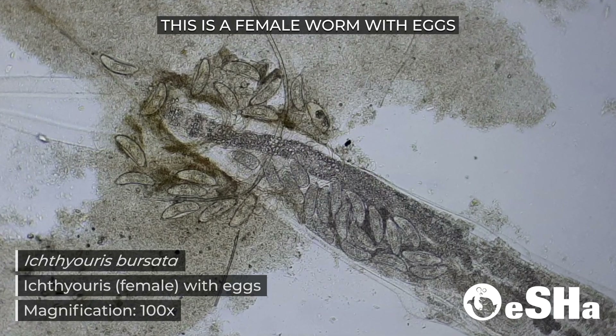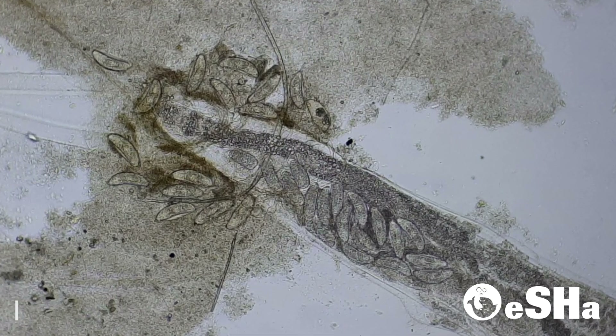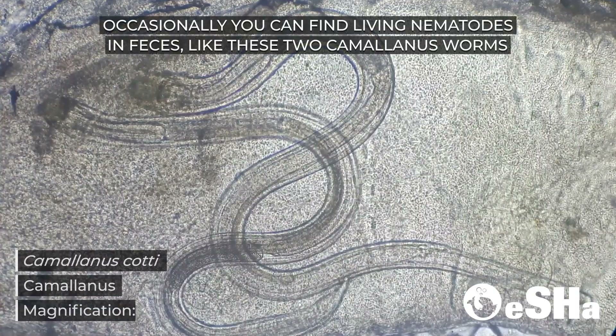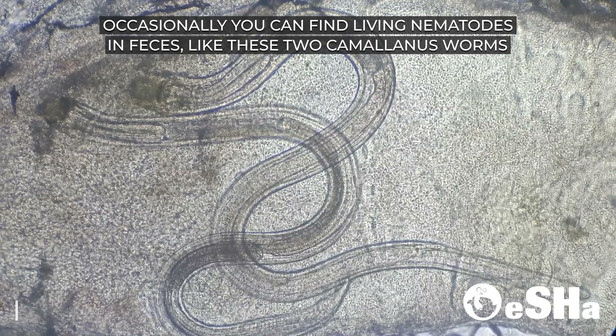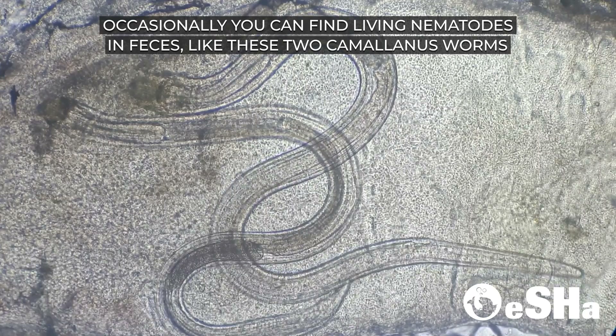This is a female worm with eggs. Occasionally you can find living nematodes in specimens, like these two camalanus worms.